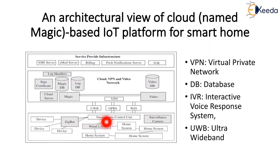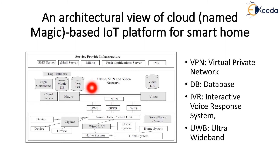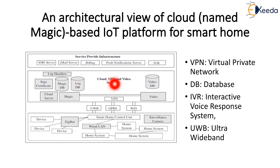The smart home control unit uses Zigbee, wired LAN, home automation system and surveillance camera, connected via Wi-Fi, GPRS or ultra wide band through a virtual private network. It consists of a cloud platform with cloud VPN and video network, database maintenance, and a cloud server using MAGIC and video. It is segmented into a video database and logging database. The service provider infrastructure uses SMS server, email server, billing and push notification server, and interactive voice response system.